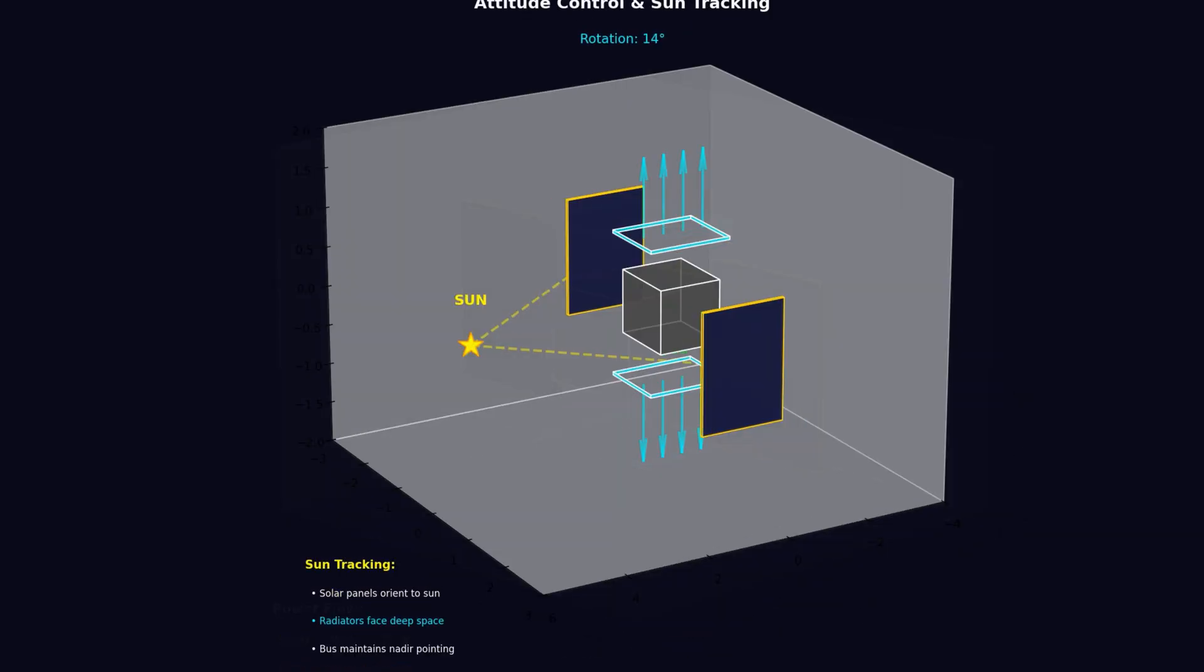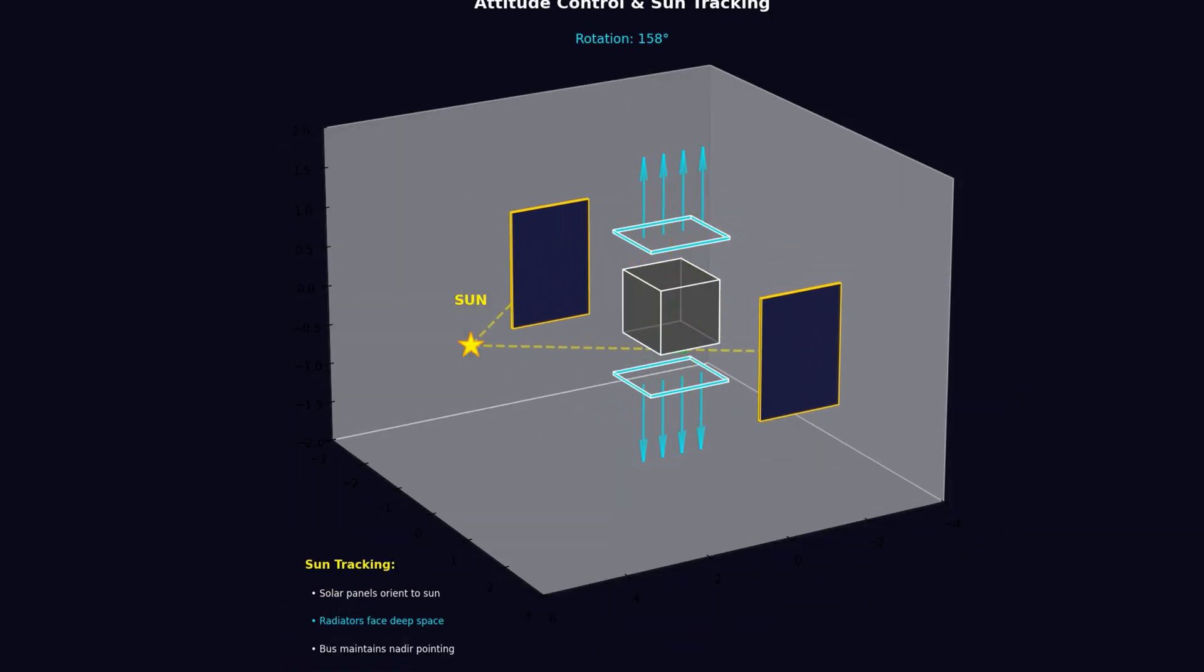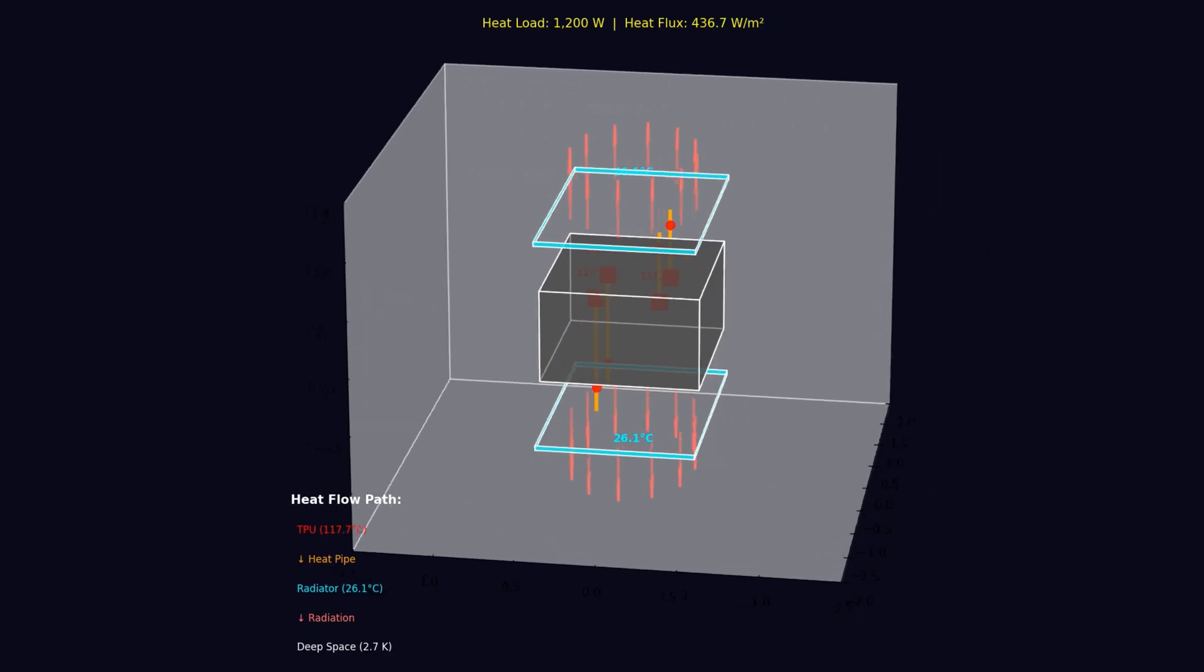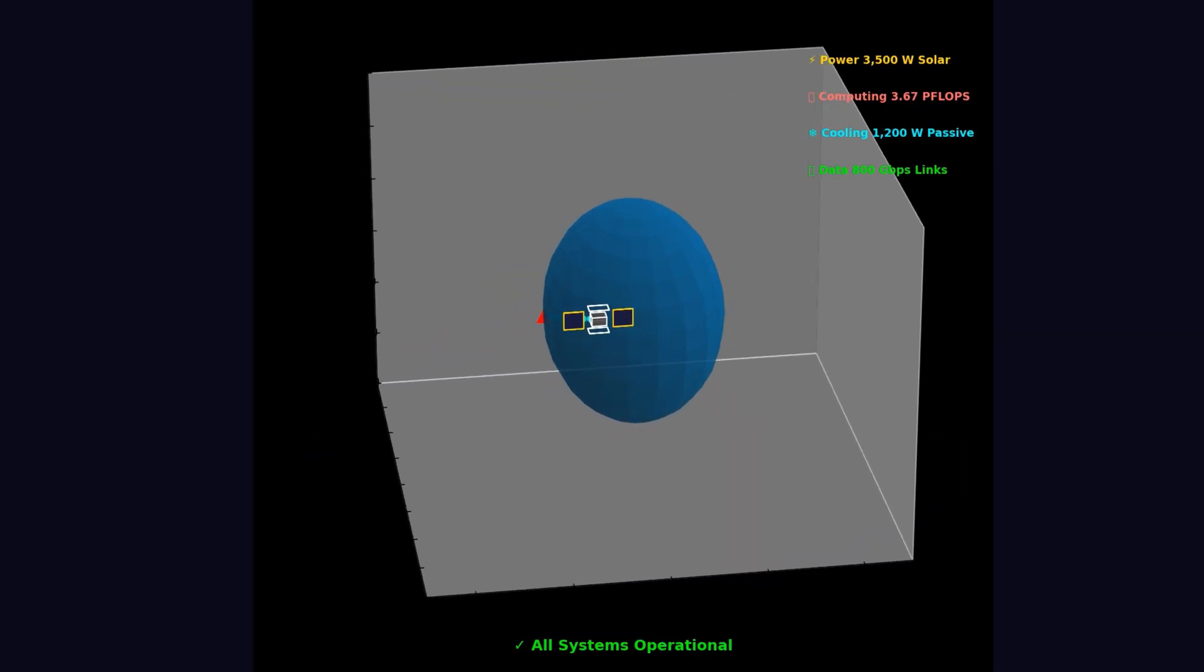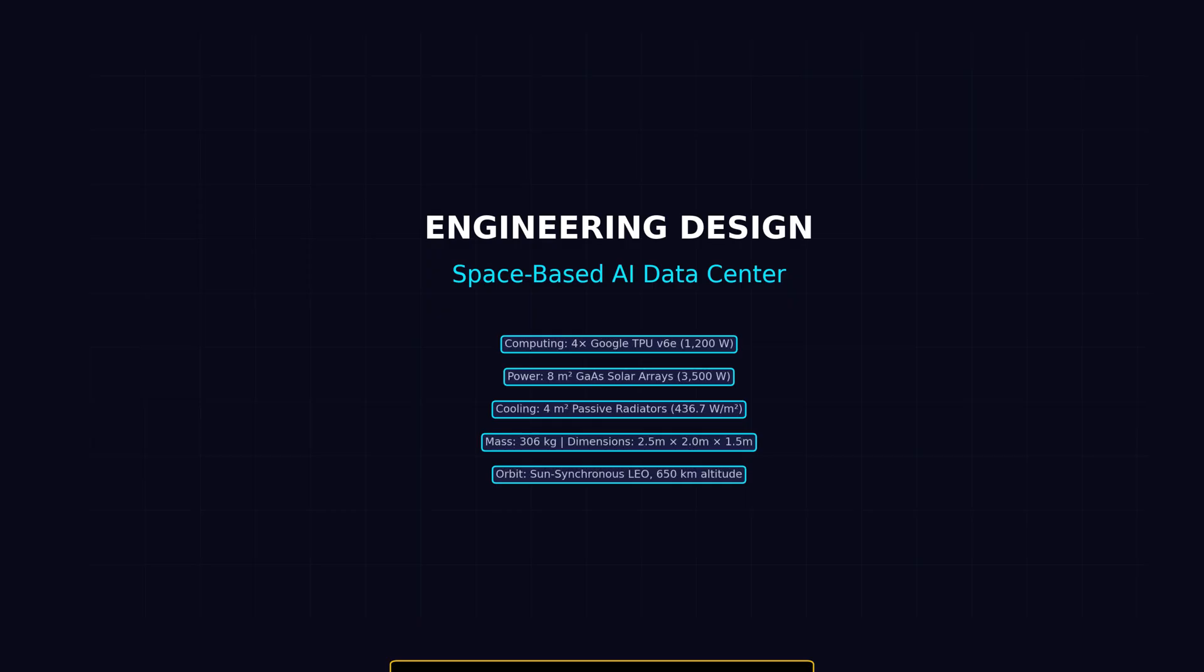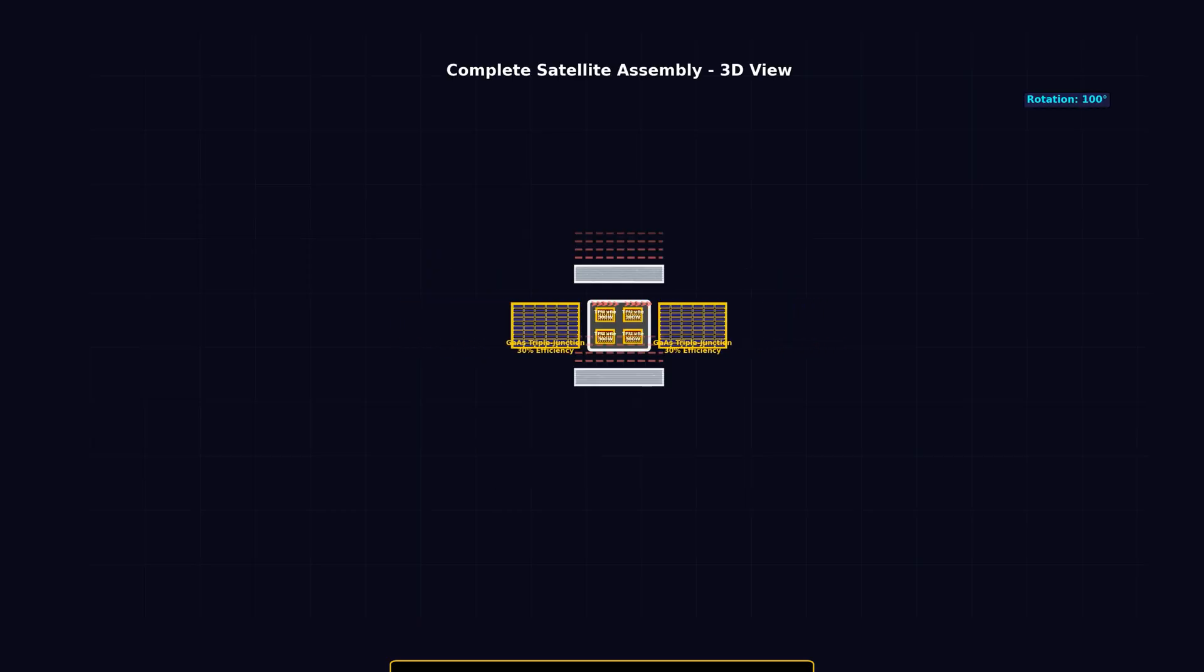The main challenge with any data center is thermal management. Each satellite generates 1200 watts of waste heat. On Earth, you'd need massive cooling infrastructure: chillers, cooling towers, pumps cycling thousands of gallons of water. It's a lot of equipment.